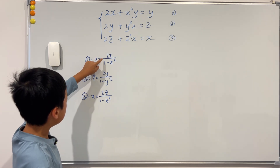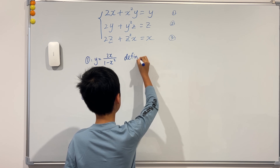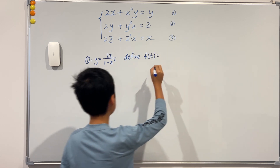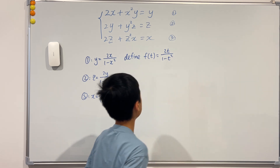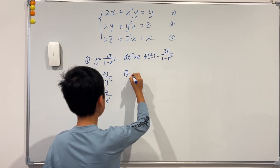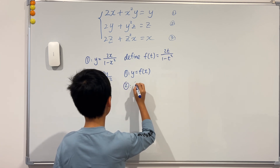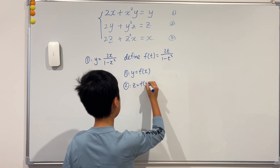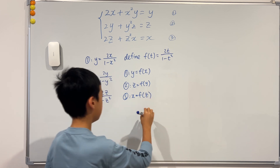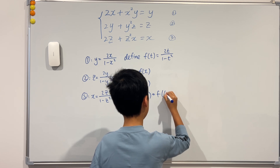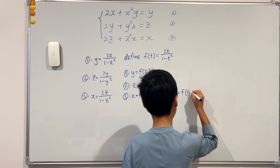We see that all three expressions have the same form, which implies we should define a function: f(t) = 2t over (1 minus t squared). From equation 1, y equals f(x). From equation 2, z equals f(y). From equation 3, x equals f(z), but z is f(y), so x equals f(f(y)), and since y is f(x), this gives x equals f(f(f(x))).